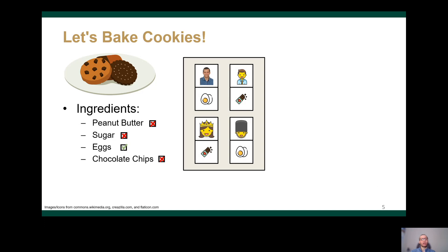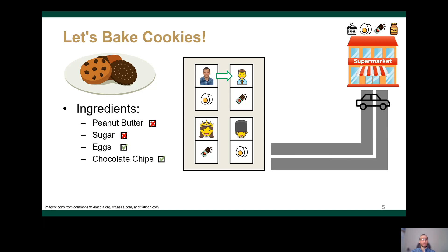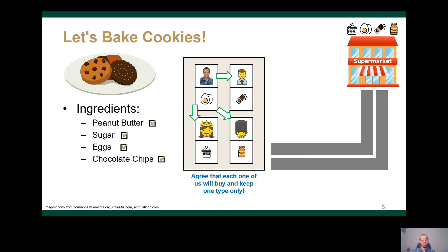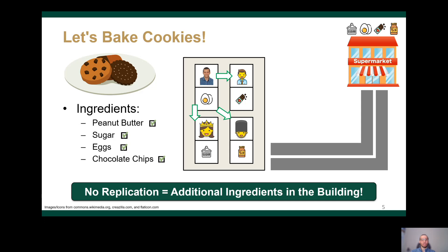Now consider another situation when I only had one ingredient — the eggs. I checked with my neighbors and found that two of them have chocolates and the other one has eggs. I went to one of them to get the chocolate, but I was still missing two ingredients and ended up going to the supermarket. But what if we agreed that each one of us is always responsible for keeping one unique ingredient? This way, I can get the missing ingredients from my neighbors and save the trip to the supermarket. By eliminating ingredient replication, we can have more unique ingredients in the building.